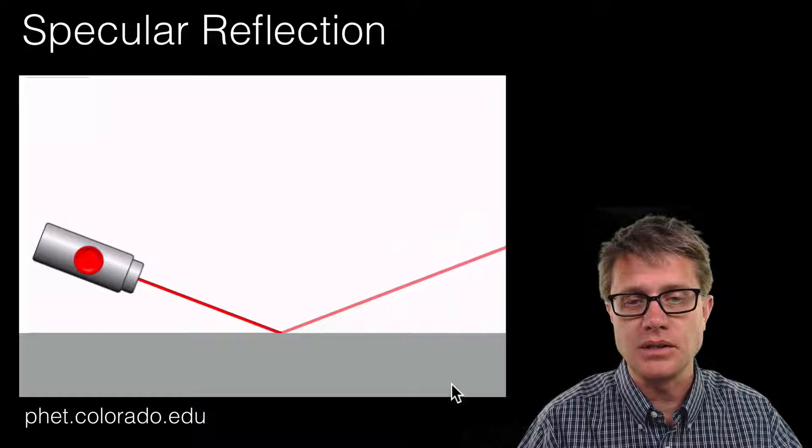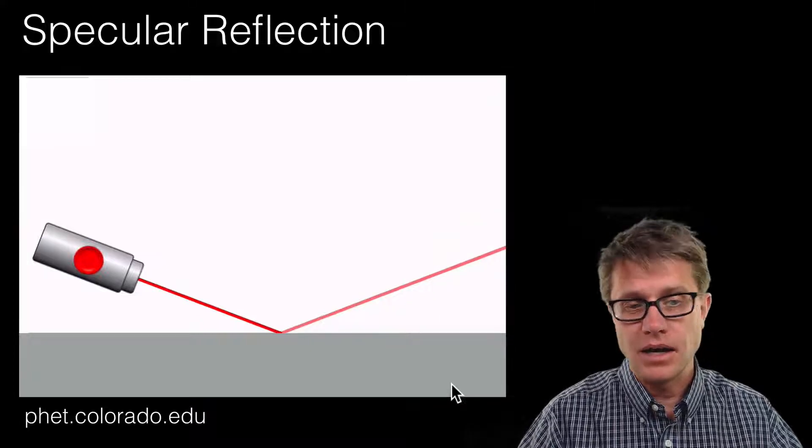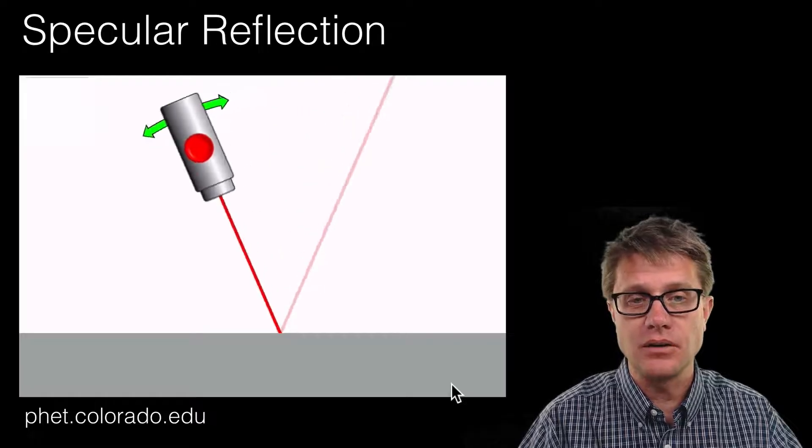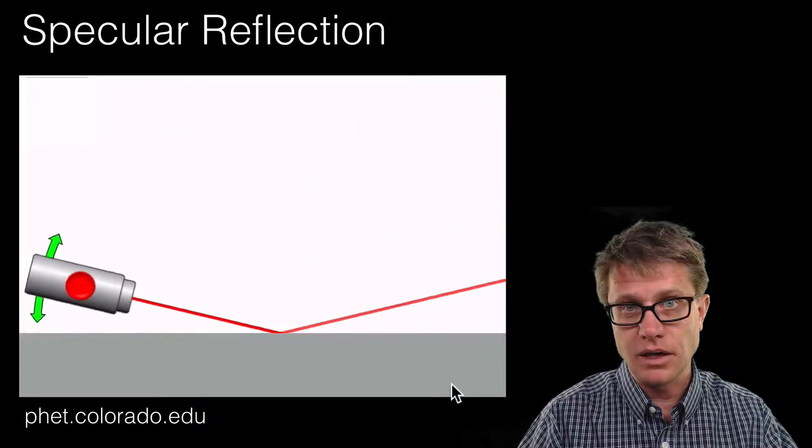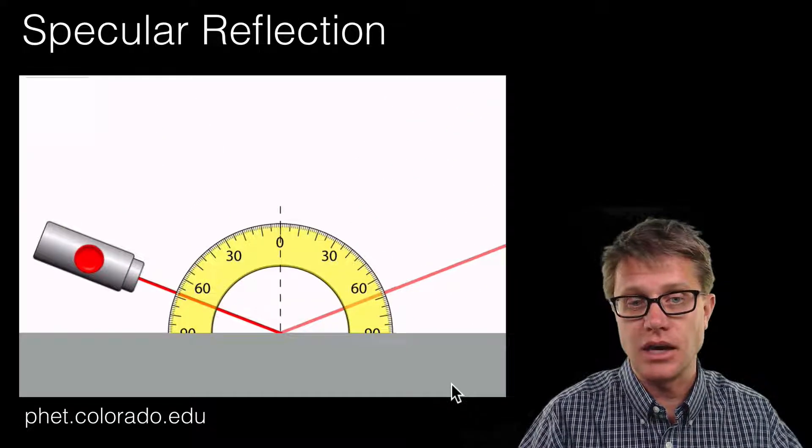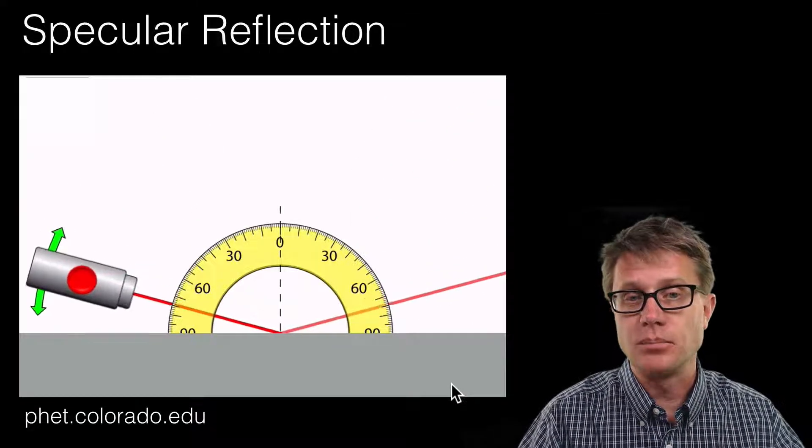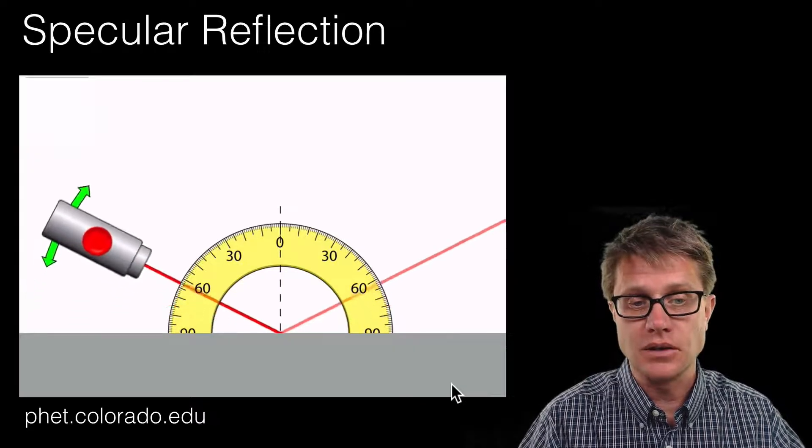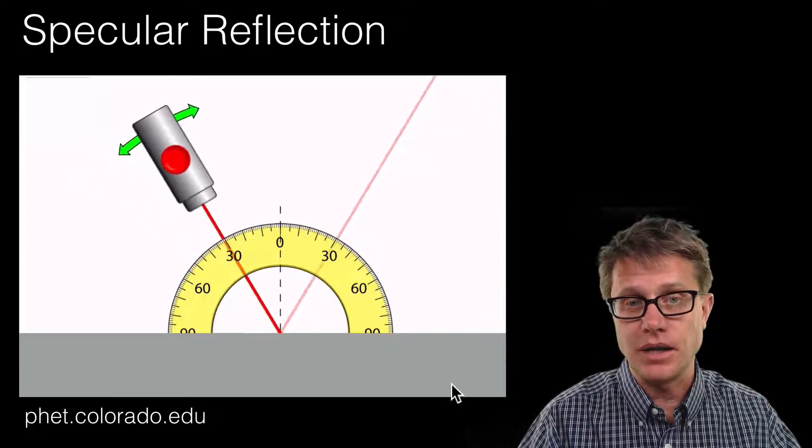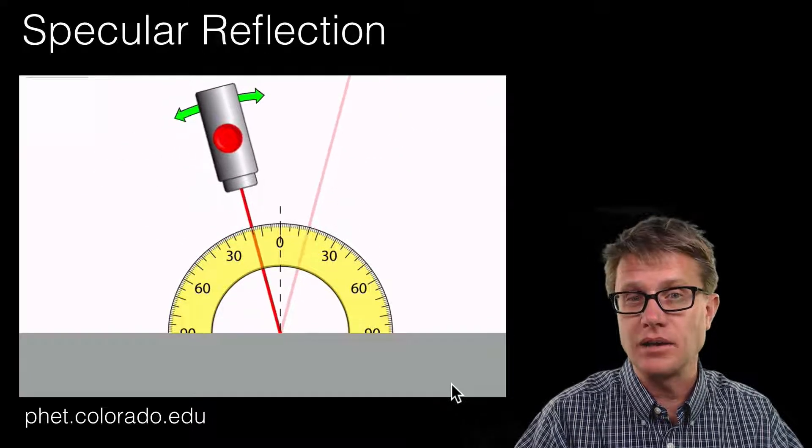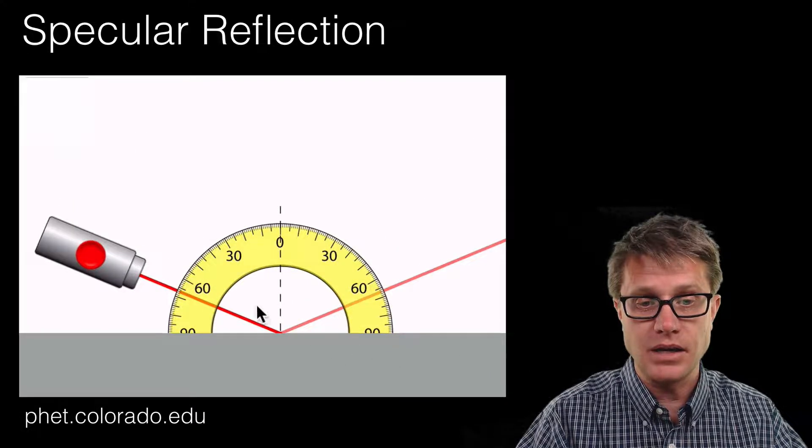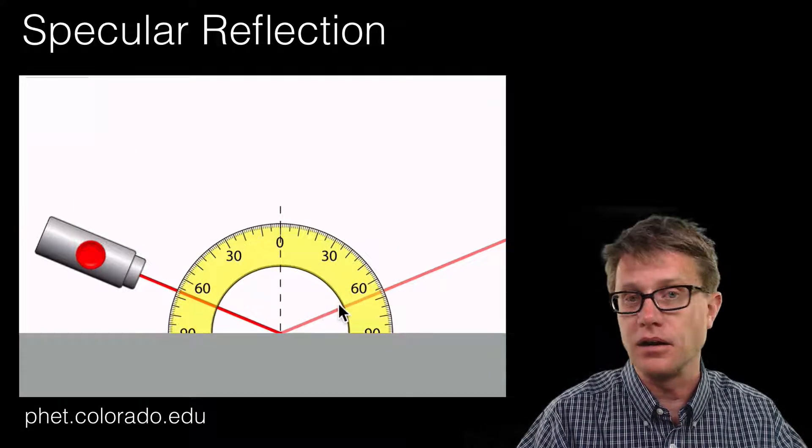And so if we model this with a PHET simulation, we have now got a laser light bouncing off the surface. You can see as I angle the laser light, as I move it from a really low angle to a really high angle, we are going to have a corresponding change in the angle of reflection. And if we actually put a protractor on and start to measure that, you can see that the measurement on the left side, between zero and that angle, is going to match exactly the angle on the right side. In other words the angle of incidence, this angle right here, is going to equal the angle of reflection.